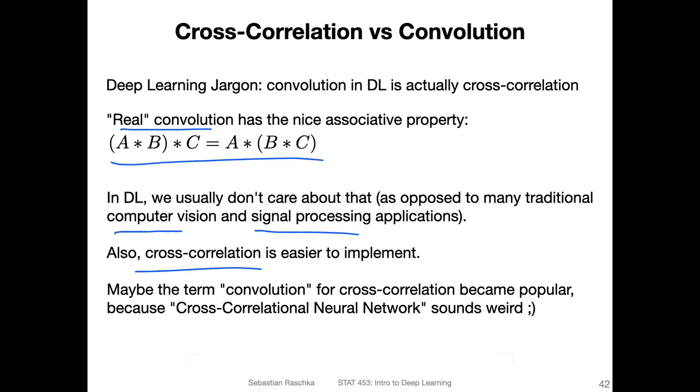But then, if we implement cross-correlation for these networks, why do we call them convolutional networks? Why don't we call them cross-correlational networks? My theory is just that cross-correlational network sounds a little bit weird, and convolutional network sounds slightly cooler. That's maybe also one aspect about the whole thing.